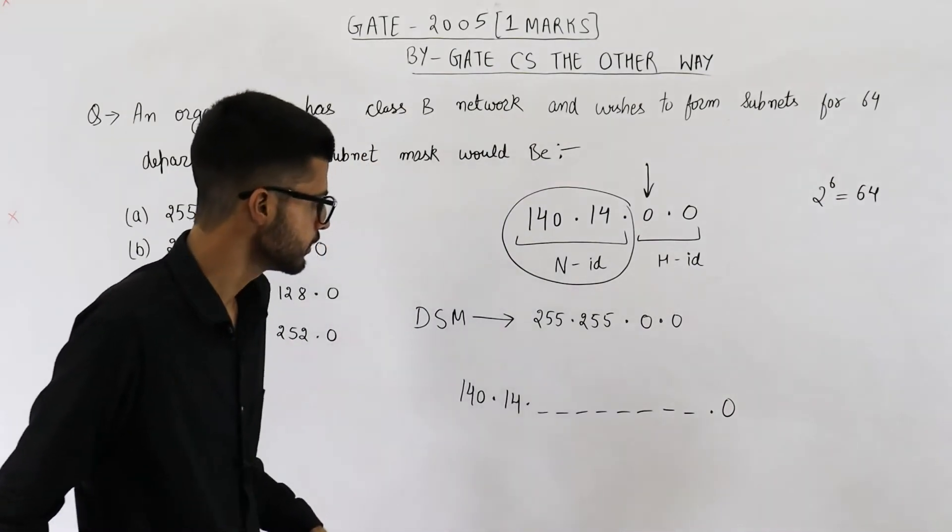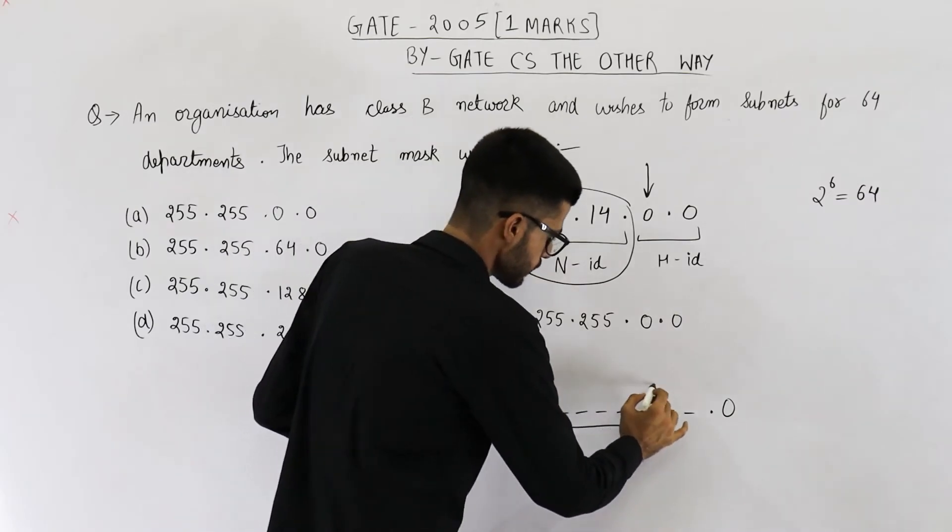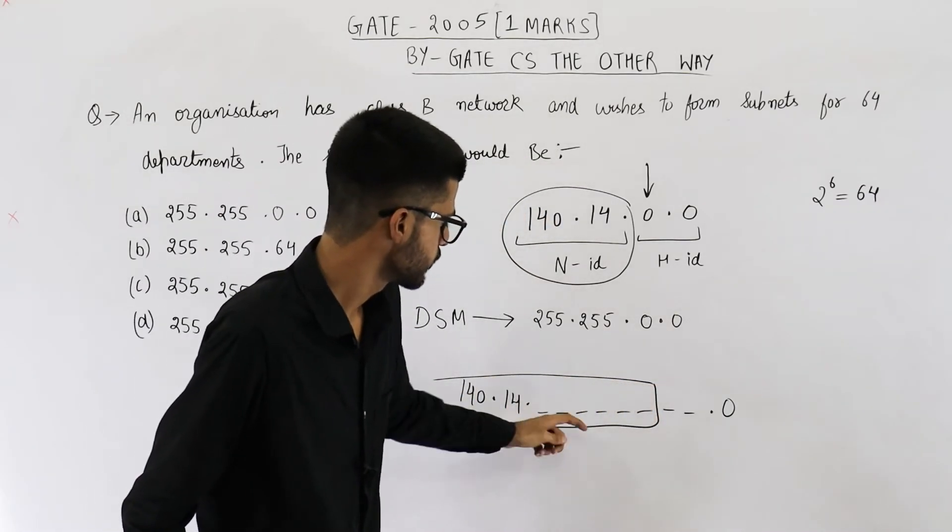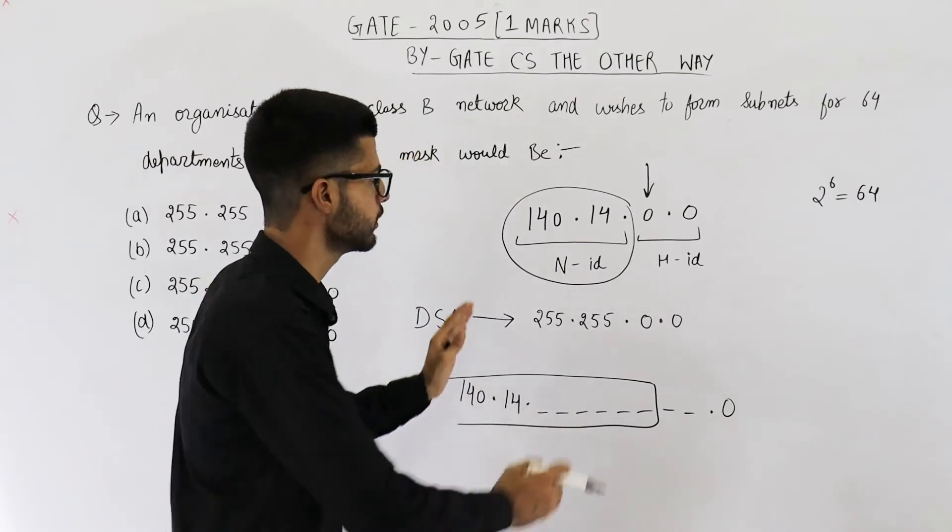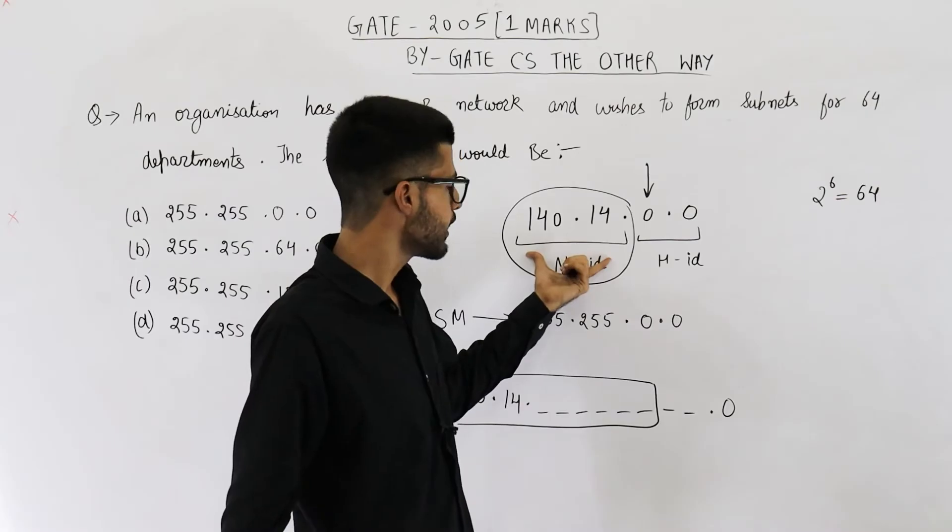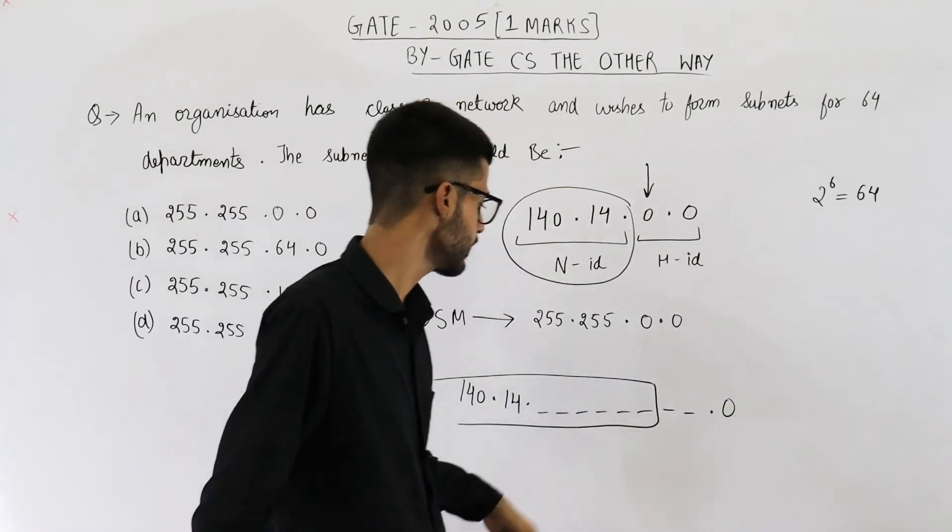Now you can see we are borrowing six bits from the host ID part to expand the network ID part. Because now after identifying this network, we want to identify subnet also. So six bits are taken.